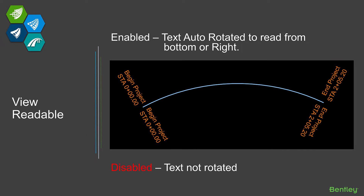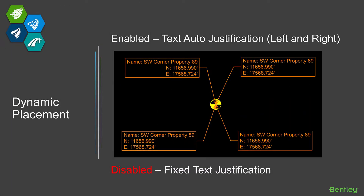The second setting is view readable. The labels on the top of the line have it enabled; the two labels on the bottom are disabled. When enabled and we place this label, it's automatically rotated 180 degrees so that it is readable from the bottom or right side of the view. With that option disabled, the label would have been created literally as it was defined, even though the curvature of the geometry at that point causes the label to read upside down.